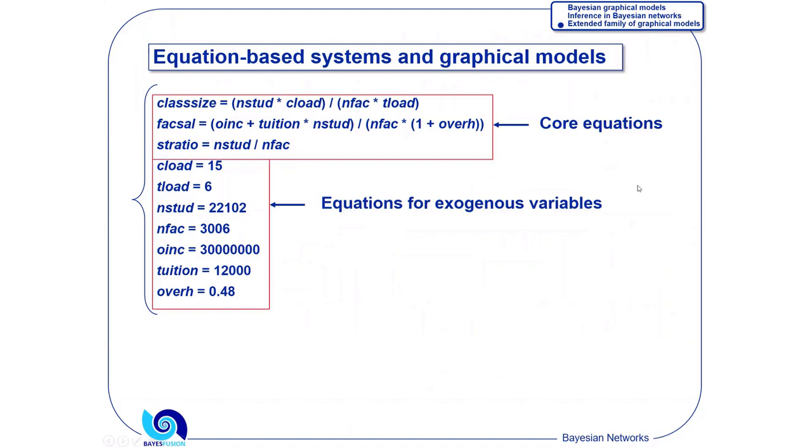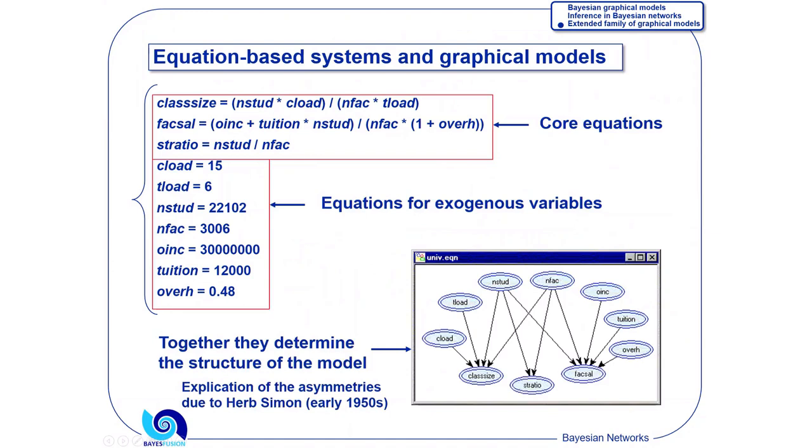In the 1950s, Herb Simon, I had the honor to work with him, proposed a way of graphical drawing of the structure captured by the system of equations. Econometricians knew that systems of equations predicted correctly the effects of manipulations, which they called changes in structure. Simon has shown that you could give the structure of your system a causal interpretation. And then if you have a causal model, you can easily make predictions about the effects of manipulation.